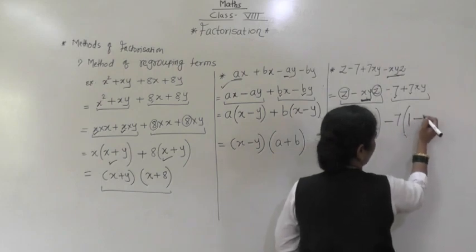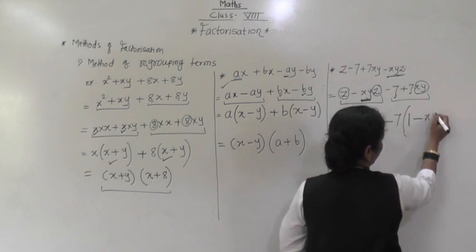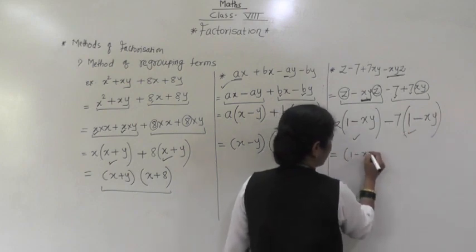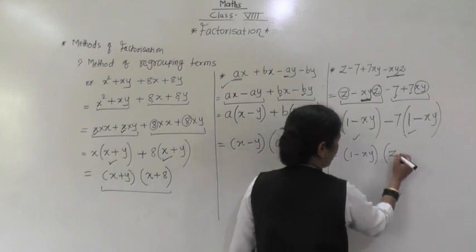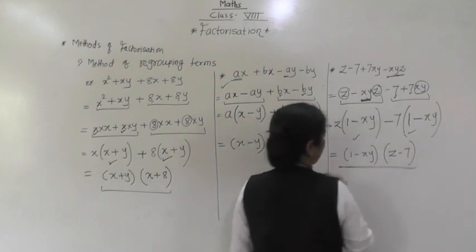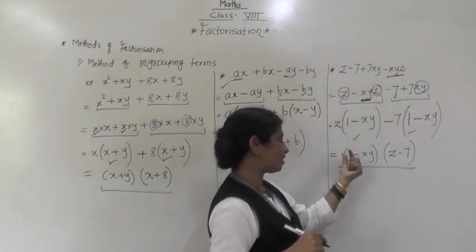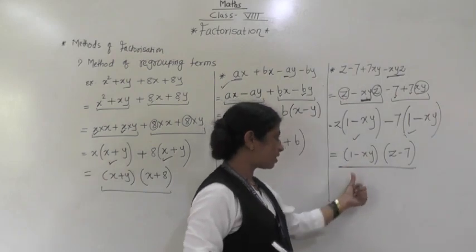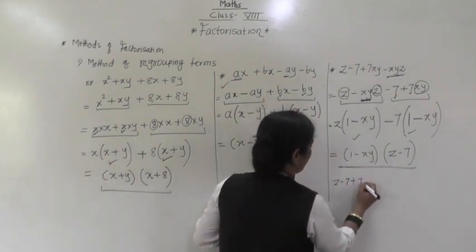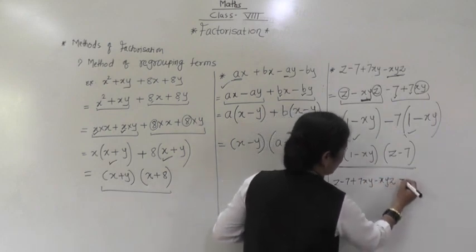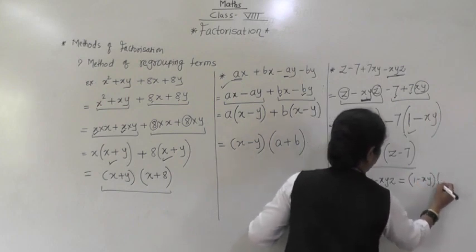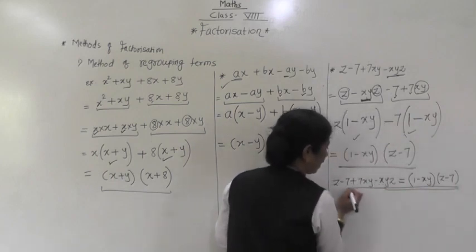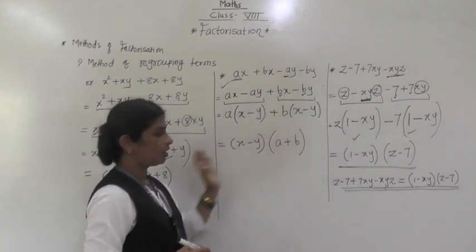Taking (1 - xy) outside: (1 - xy)(z - 7). So the factors of z - 7 + 7xy + xyz are (1 - xy) and (z - 7). The factor form is (1 - xy)(z - 7). This is the proper way to write the factors of any given algebraic expression.